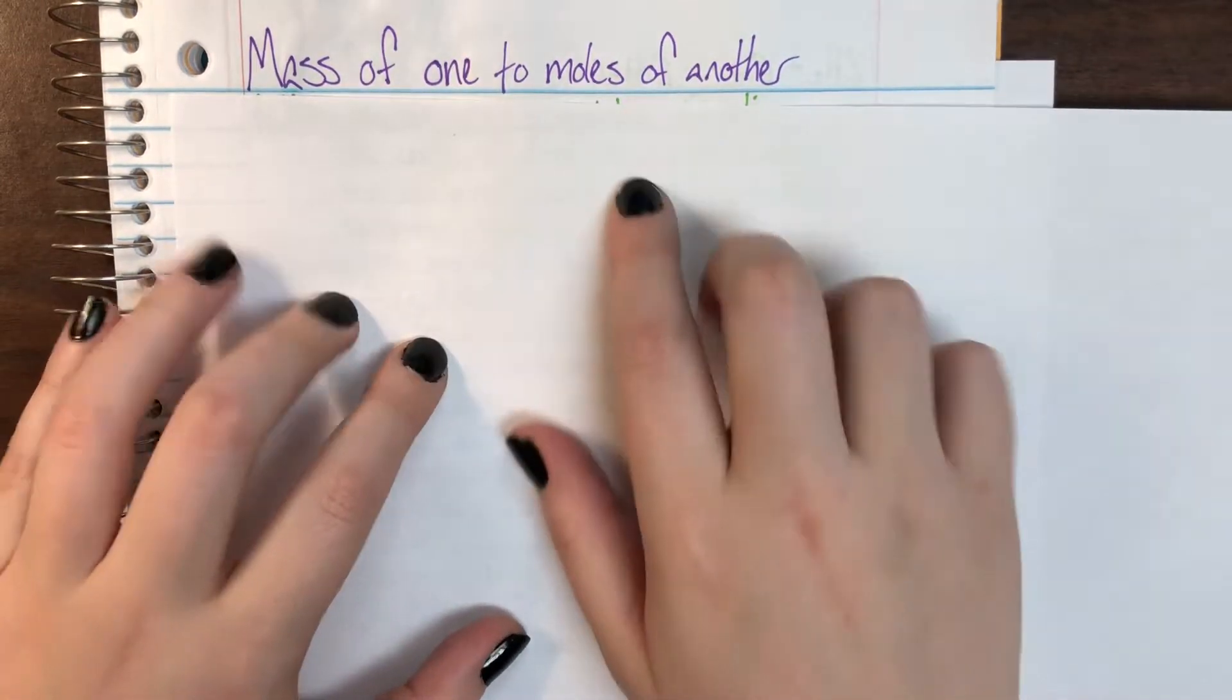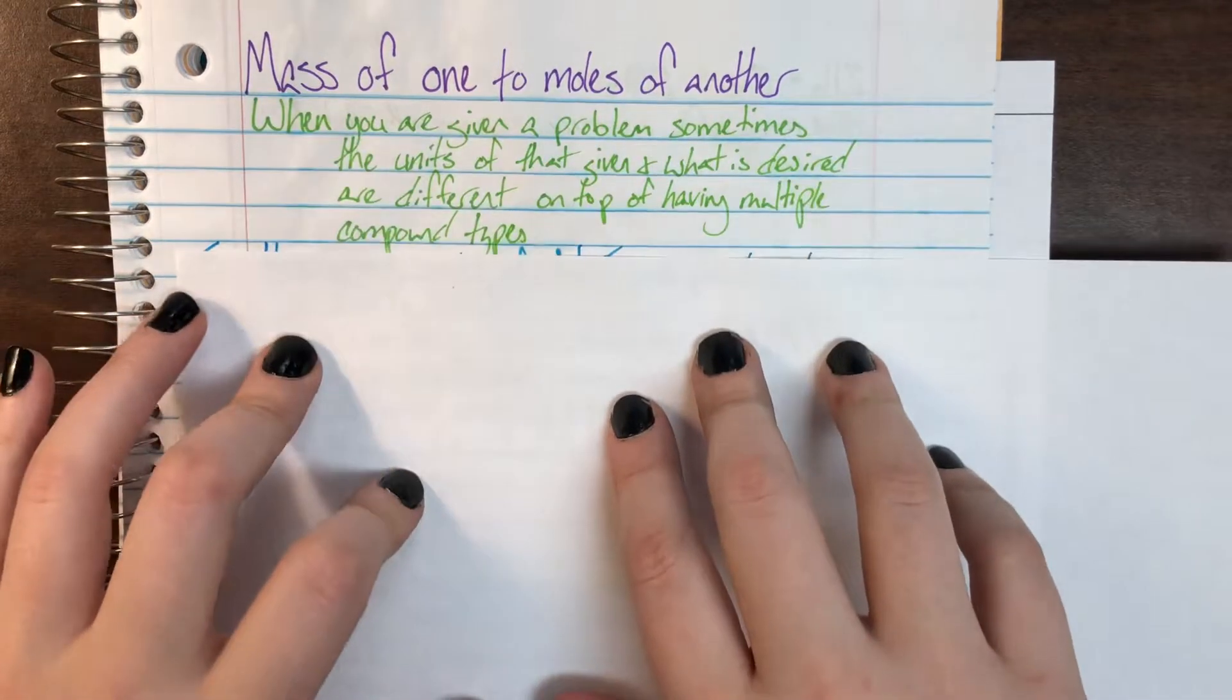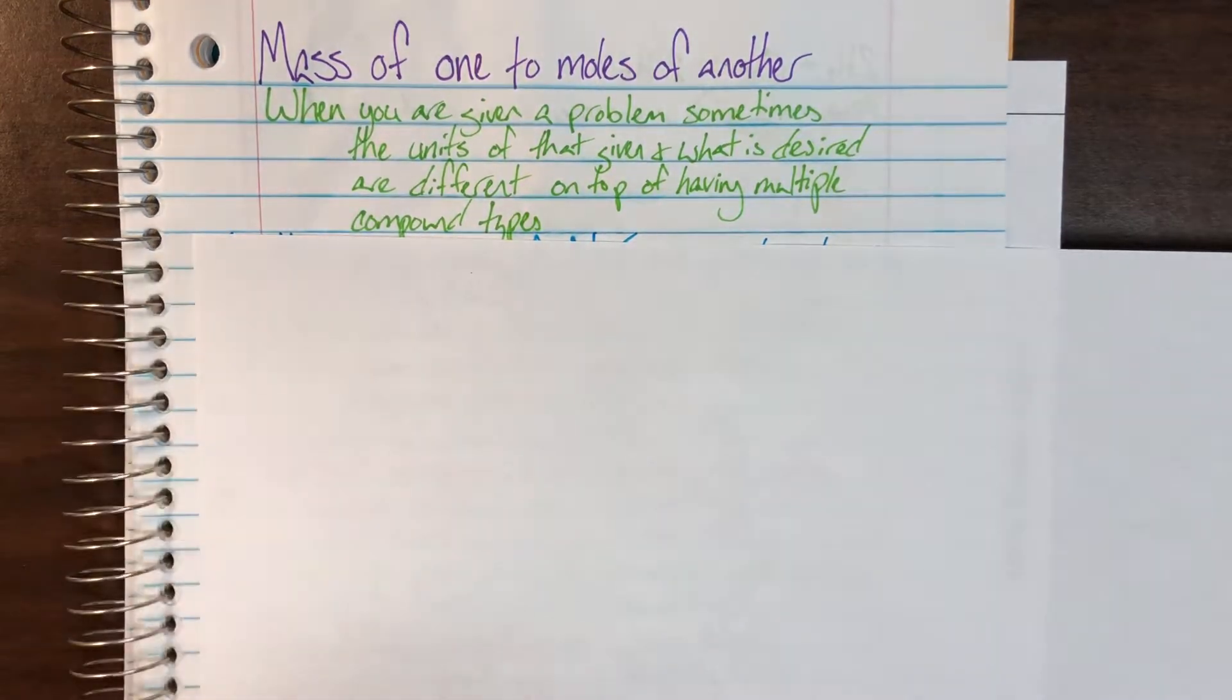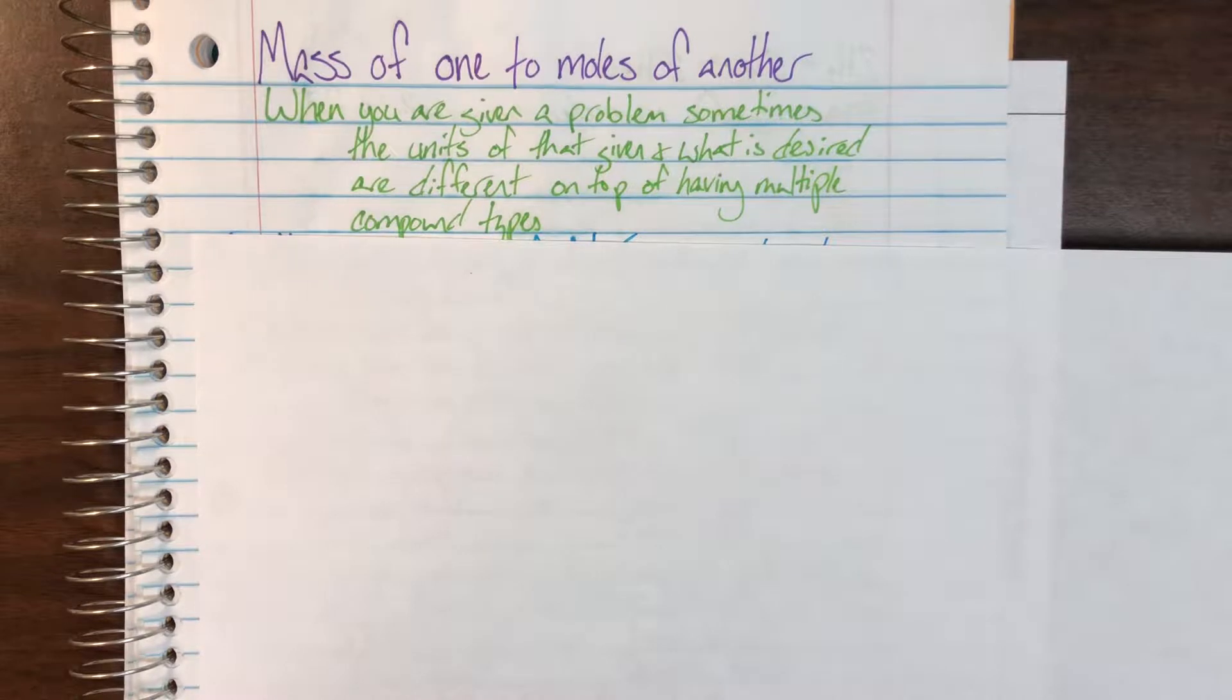We're going to figure out exactly how to do that. This does happen in real life. Sometimes I know how many grams of reactant I have available in the storeroom, and I know that I need a particular number of moles of something else to be produced, so I need to do that math. And that means that on top of it being a different type of compound, I also have a different unit.